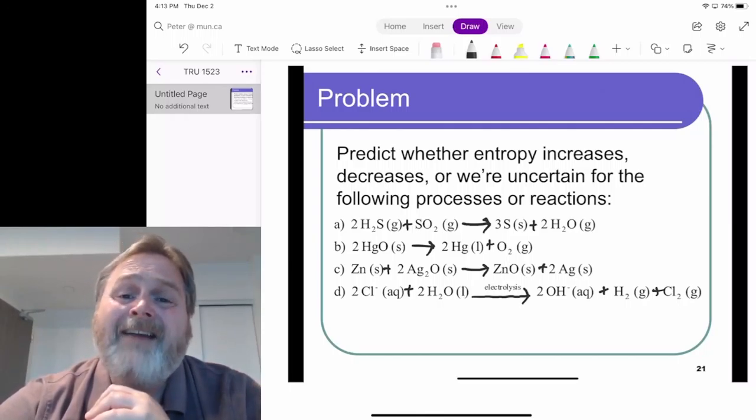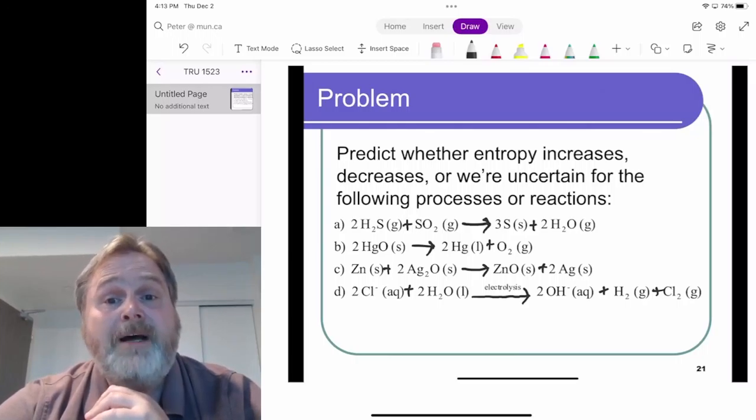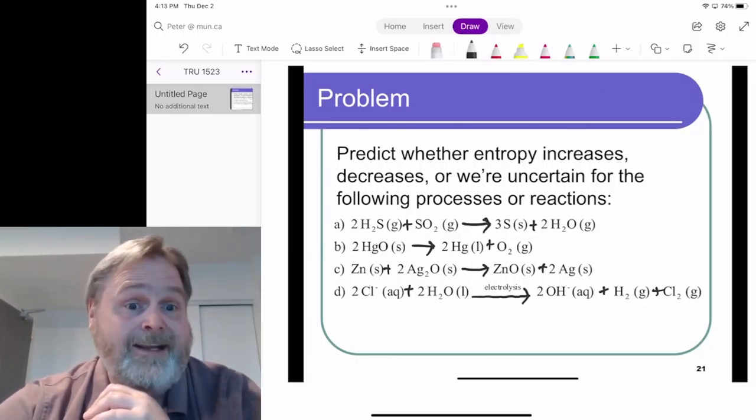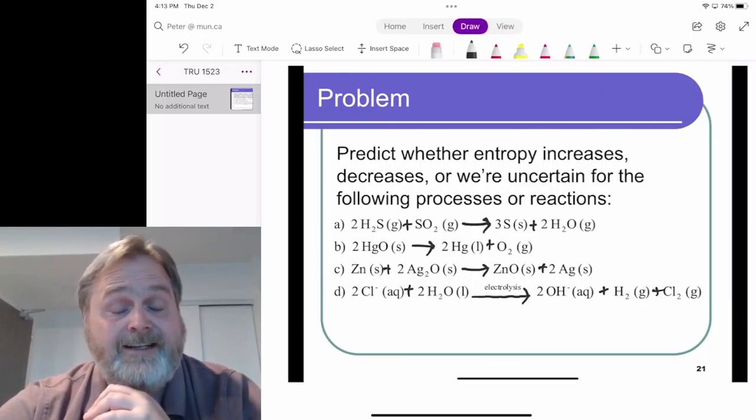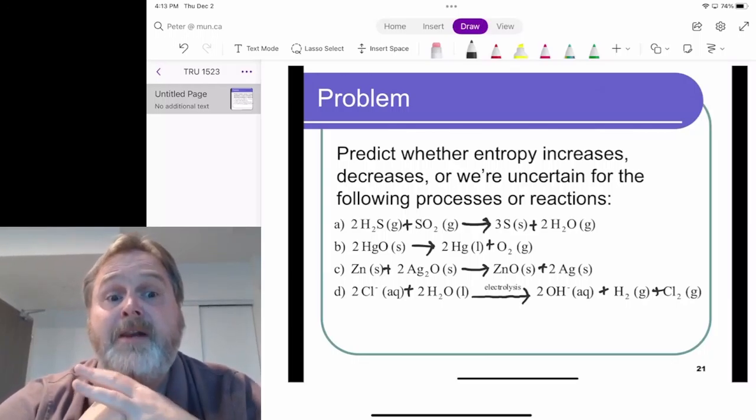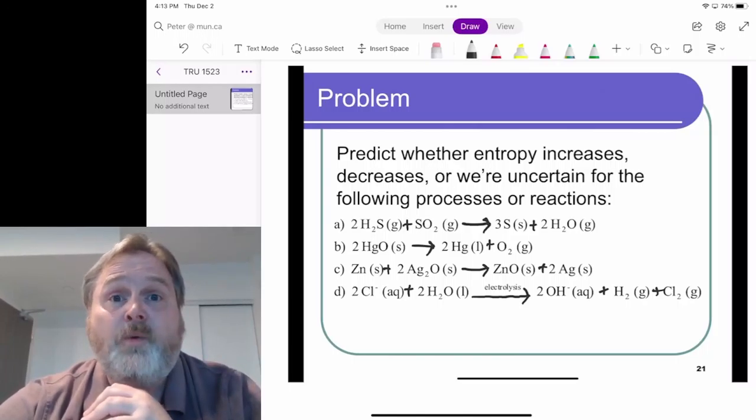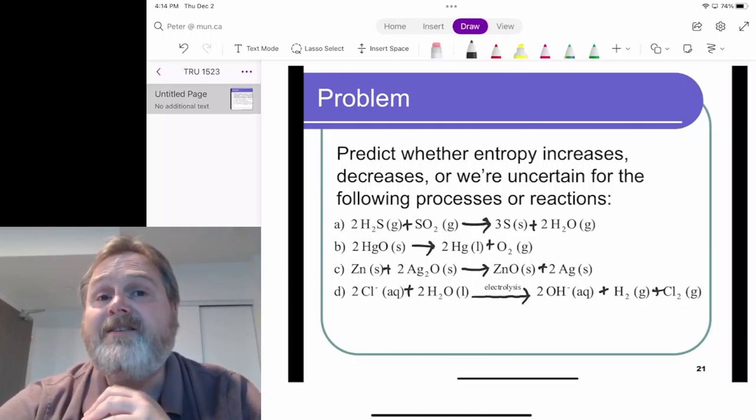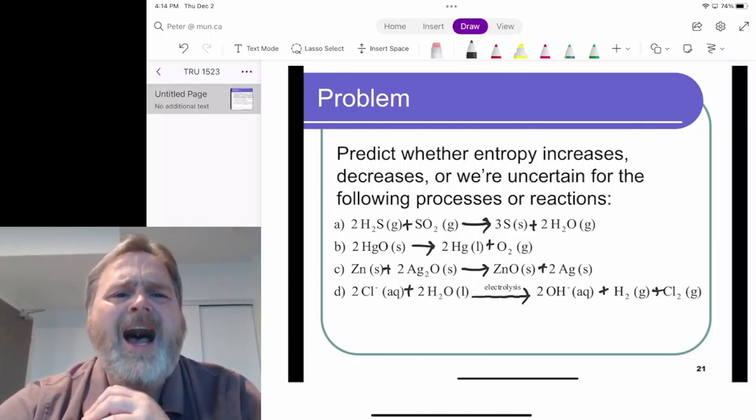So I would have to say that I really am not very certain about the entropy, whether it's increasing or decreasing for this. There likely is a decrease or increase, but we would need to figure out some numbers. And we will see eventually that there is a way to do that using something very similar to Hess's law that we saw for enthalpy changes. But for now, C, I'm uncertain.